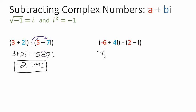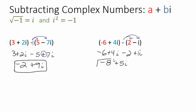First thing we need to do is distribute this negative into the second parentheses. So we're going to end up with negative 2, then plus i — or minus 2 plus i. This is like 1i because there's no coefficient written; it's understood to be 1. We're going to combine the real number parts: negative 6 take away 2 is negative 8. And the imaginary part, 4i plus 1i is 5i. And we have a complex number.